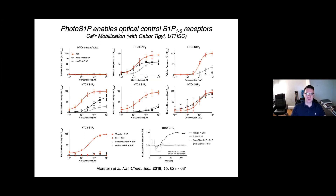We collaborated with Gabor Tigyi at the University of Tennessee Health Science Center to study the pharmacology in more detail and look at different sphingosine-1-phosphate receptor subtypes. In calcium mobilization dose-response curves, you can see in red the endogenous lipid, in black the lipid in trans (the linear form), and in gray the lipid in cis (the bent form). For S1PR1, the trans form is more potent than the cis form — it's a partial agonist, but there is a large concentration window where trans is more potent than cis. The same holds for S1PR3, where the trans lipid is much more potent than the cis lipid over an even larger concentration range.